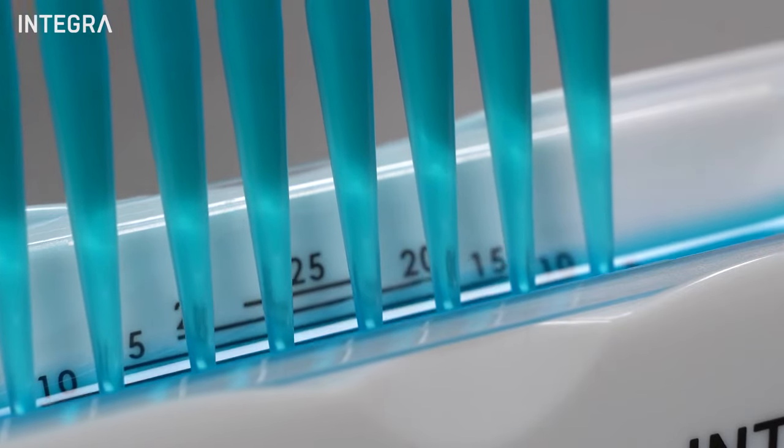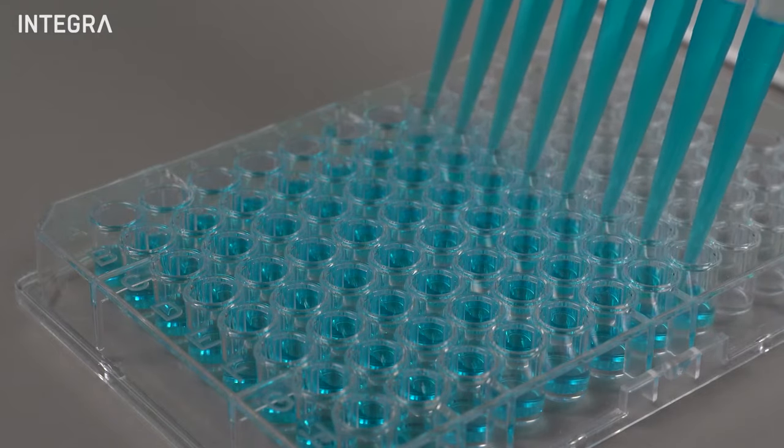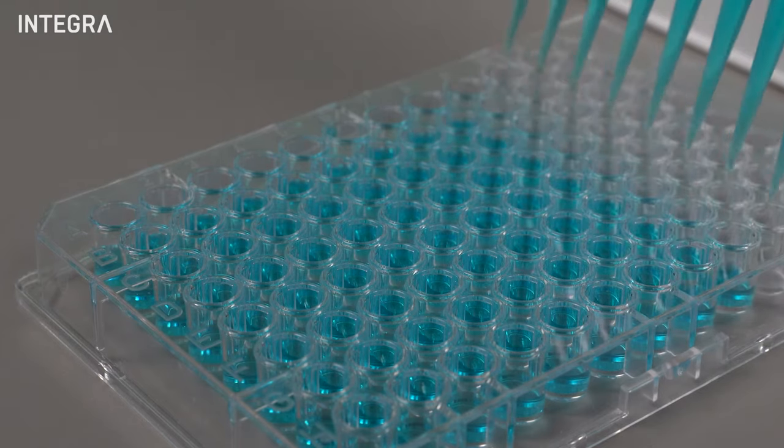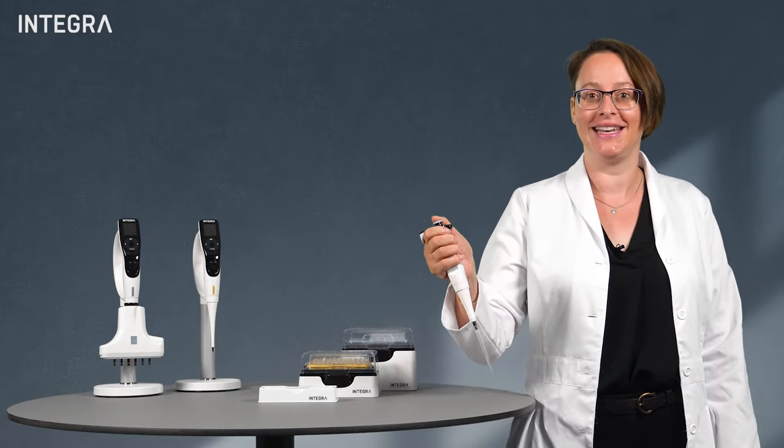Precision, on the other hand, measures how true the pipette is to a target volume over multiple dispenses. So if you dispense 300 microliters, how close is each dispense to the other? This is sometimes referred to as the CV and can be corrected with proper pipetting techniques.